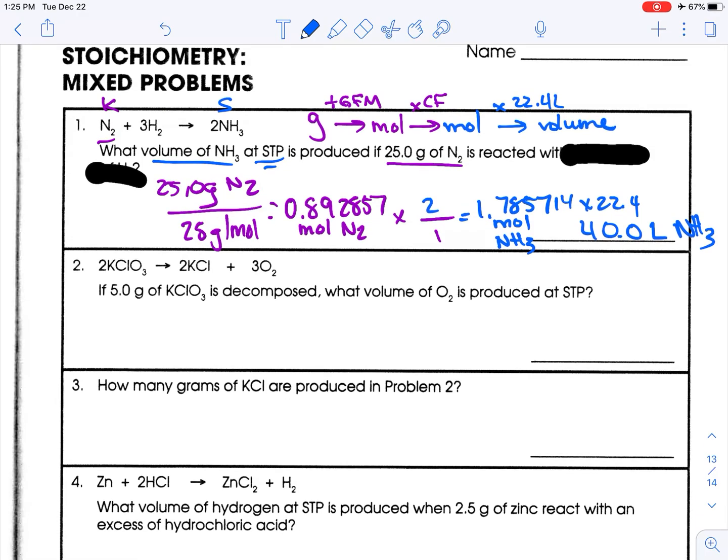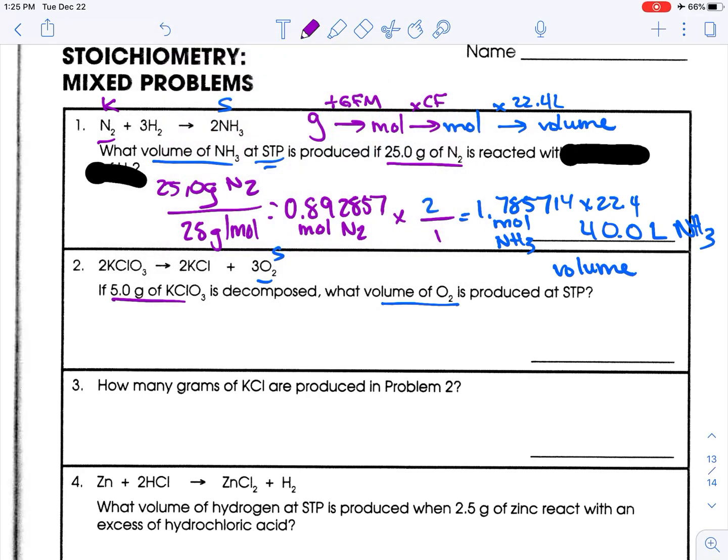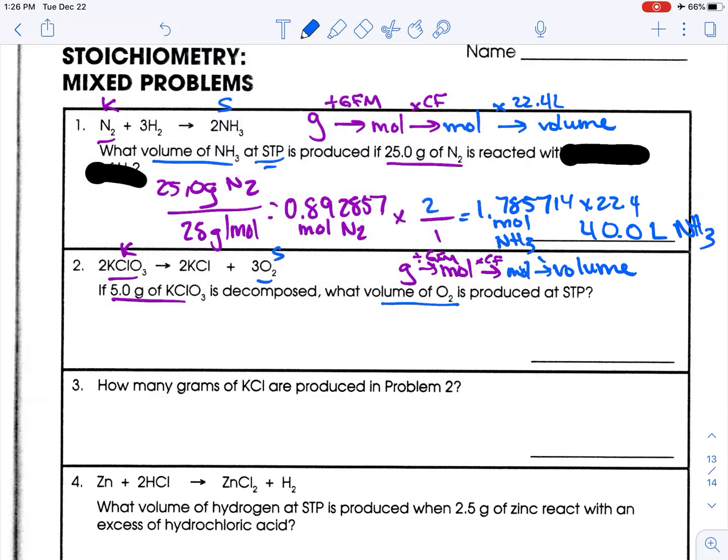If five grams of potassium chlorate is decomposed, what volume of oxygen is produced at STP? So we are looking for oxygen's volume, that's our seek, and we are given mass. This is exactly the same one, so we're going to do grams to moles, which is divided by GFM, and then to go to the other mole, we're going to multiply by conversion factor, and then to go to volume, we're going to multiply by 22.4, exactly the same procedure as the first one.